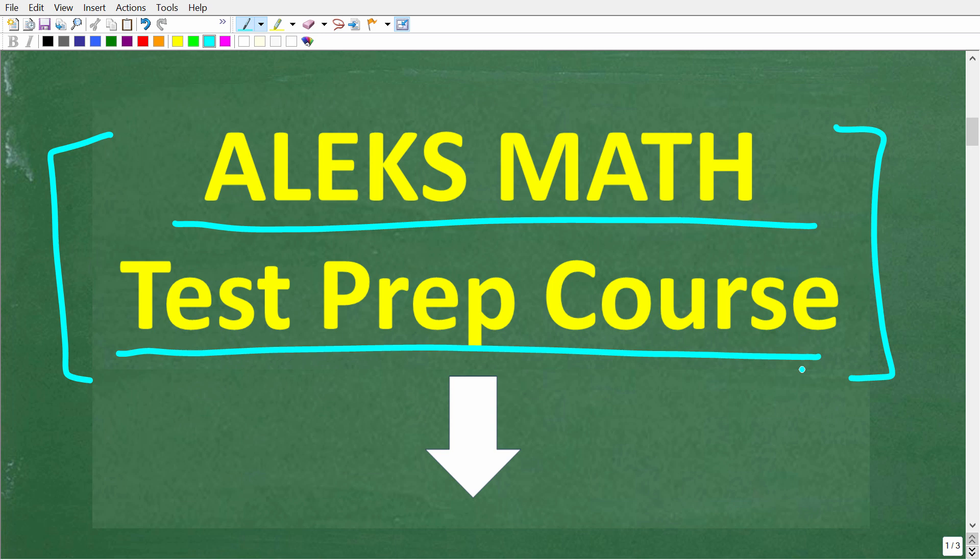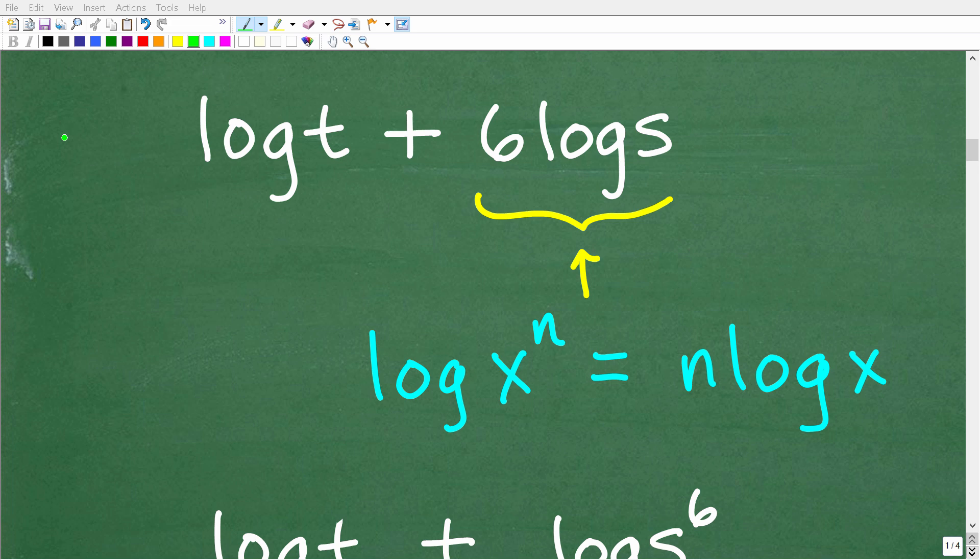But let's get back to the problem. Okay, so now that we understand these properties of logarithms, we can easily condense this expression. So we have log t plus 6 log s. So where we want to start is this expression right here. So 6 log s. So how can we condense this? Well, we need to be thinking about that power property. So we can take this 6 here and move it up to this s right here as the exponent.